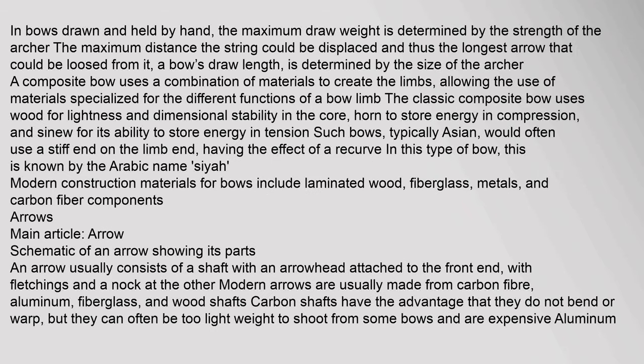In bows drawn and held by hand, the maximum draw weight is determined by the strength of the archer, and the bow's draw length is determined by the size of the archer. A composite bow uses a combination of materials to create the limbs. The classic composite bow uses wood for lightness and dimensional stability in the core, horn to store energy in compression, and sinew for its ability to store energy in tension. Such bows, typically Asian, would often use a stiff end on the limb, having the effect of a recurve, known by the Arabic name Siyah.